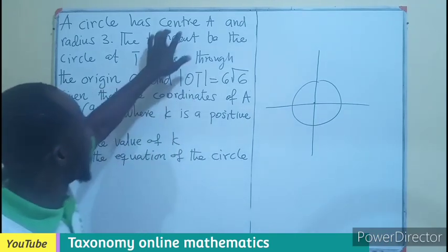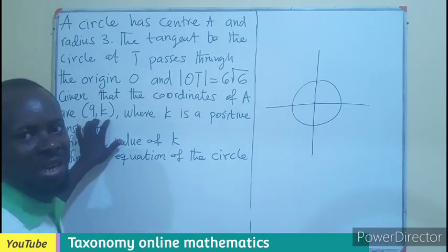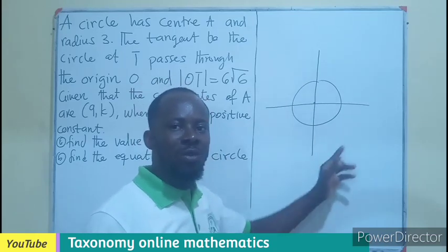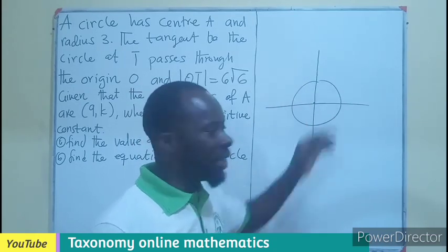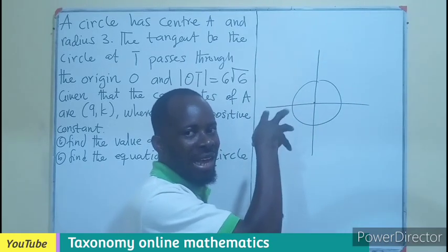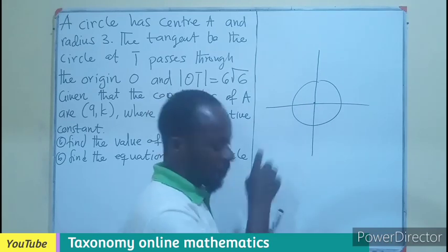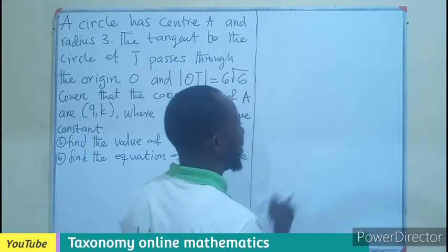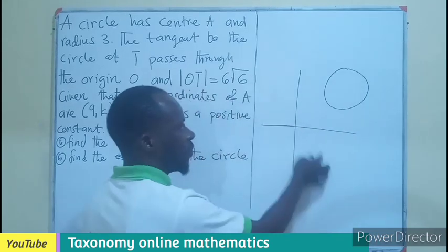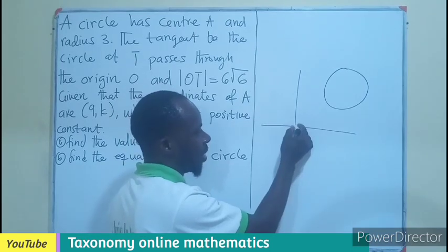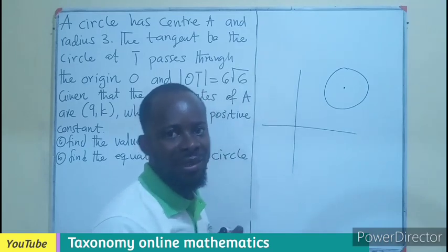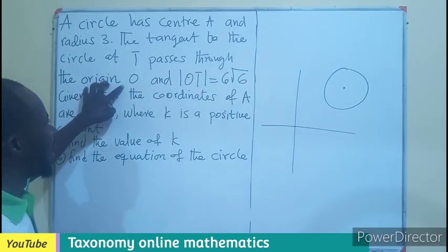But here we have been told that the center is A and the value of A has been given as 9 and K, which simply means that the circle cannot pass through the plane in this form. It means the circle could be anywhere but with the center not being the origin. In another vein, it means that if you have the XY plane, the circle can be away from the origin. What I mean is the origin of the plane, the center could be here.